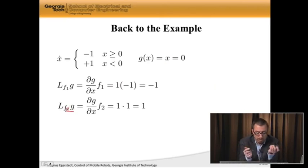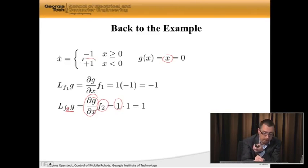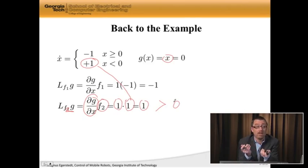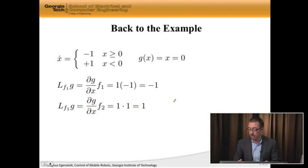Lf2g, well, it's dg dx, which is equal to the derivative of that with respect to x, which is 1. And f2, which is plus 1, right? So I get 1 times 1, which is equal to 1, which is positive, which was the other condition for having type 1 Zeno. So we know that we actually have type 1 Zeno, we're sliding here.